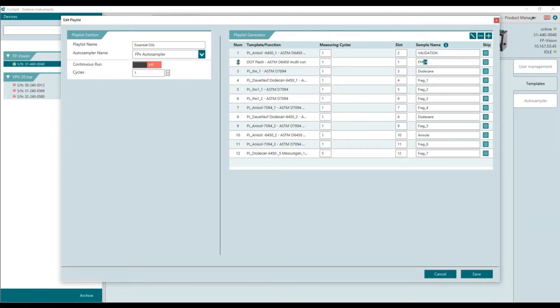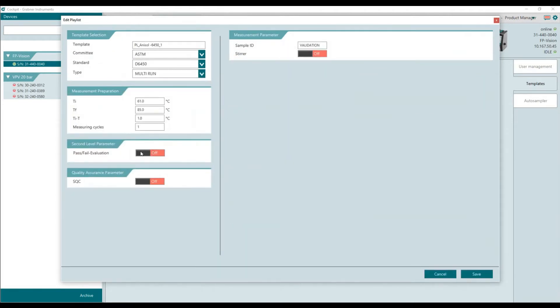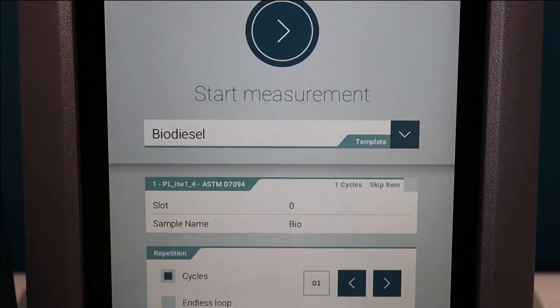Set limits for pass-fail evaluation and upgrade to cockpit SQC for management of your quality assurance program according to ASTM D6299.